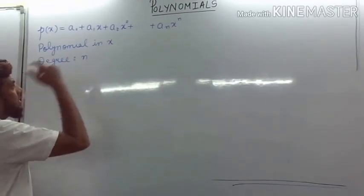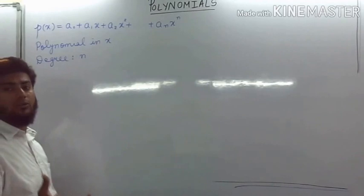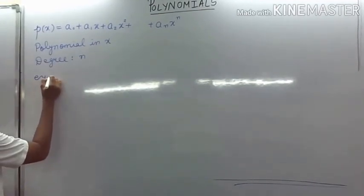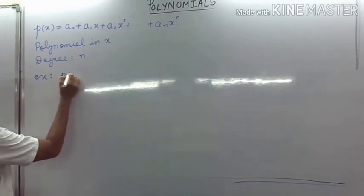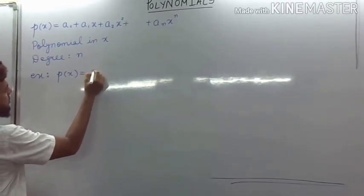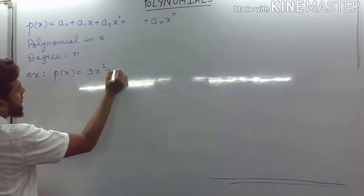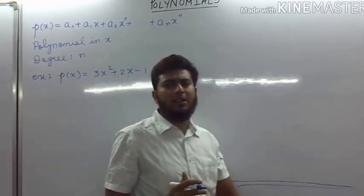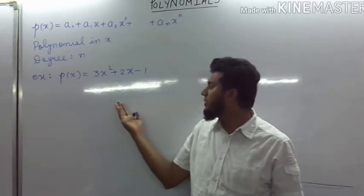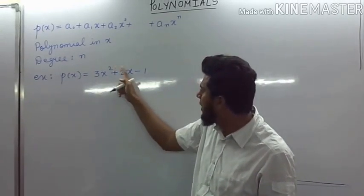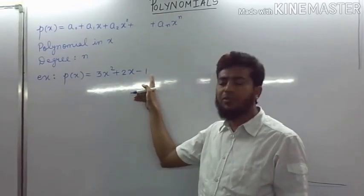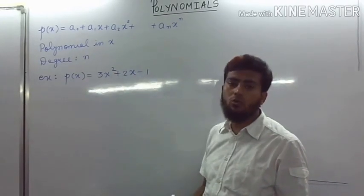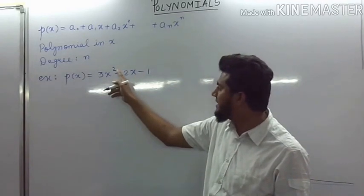Now we will see how to find the value of a particular polynomial. For example, if we have a polynomial like p(x) = 3x squared plus 2x minus 1. We generally write the polynomial in descending powers of x. Here the powers of x are 2, 1, and 0 — so this is a polynomial in x with degree 2 because the highest power of x is 2.